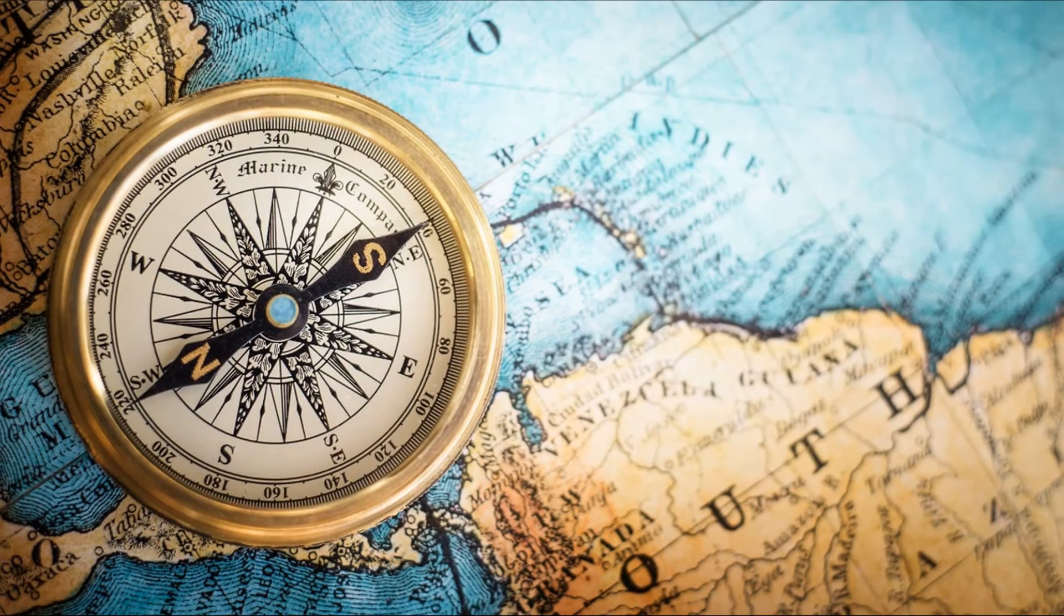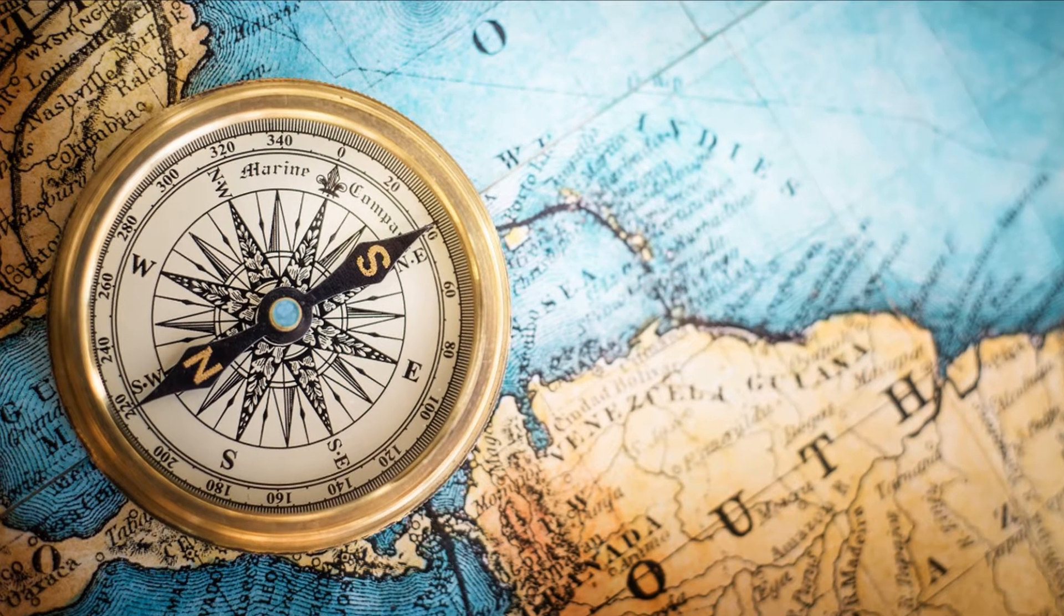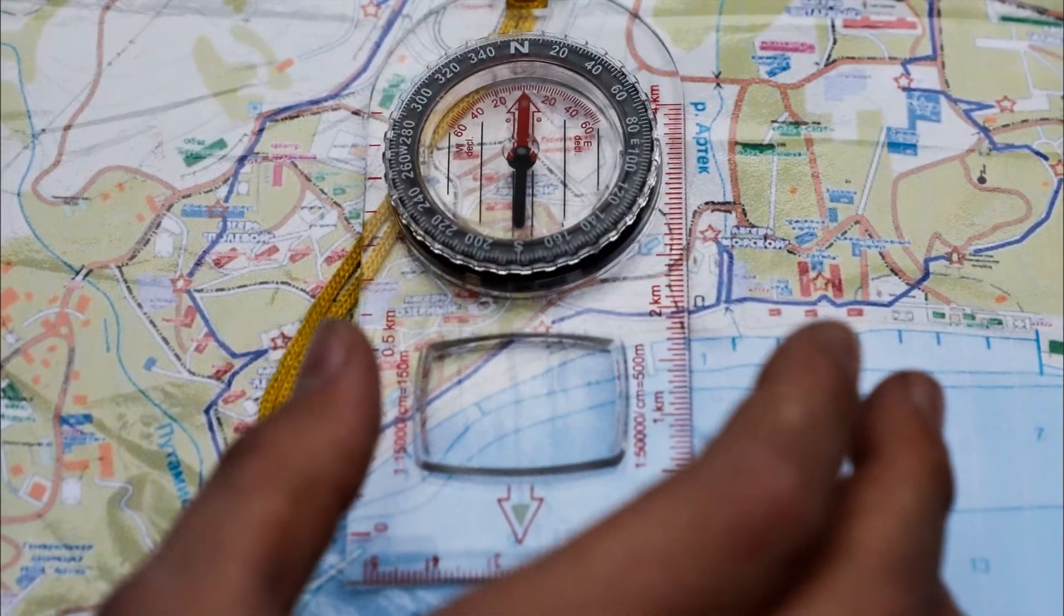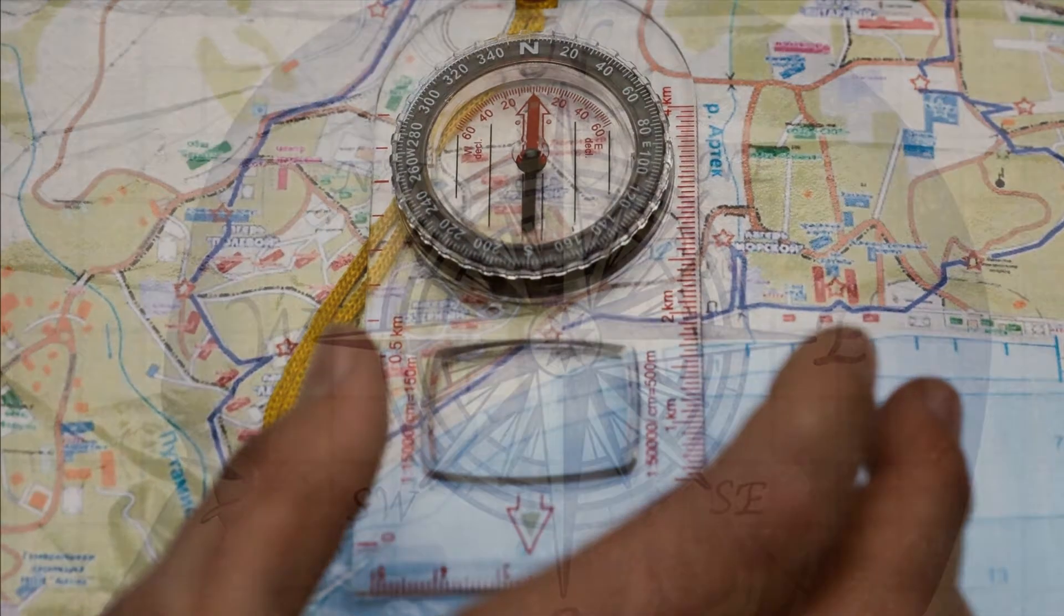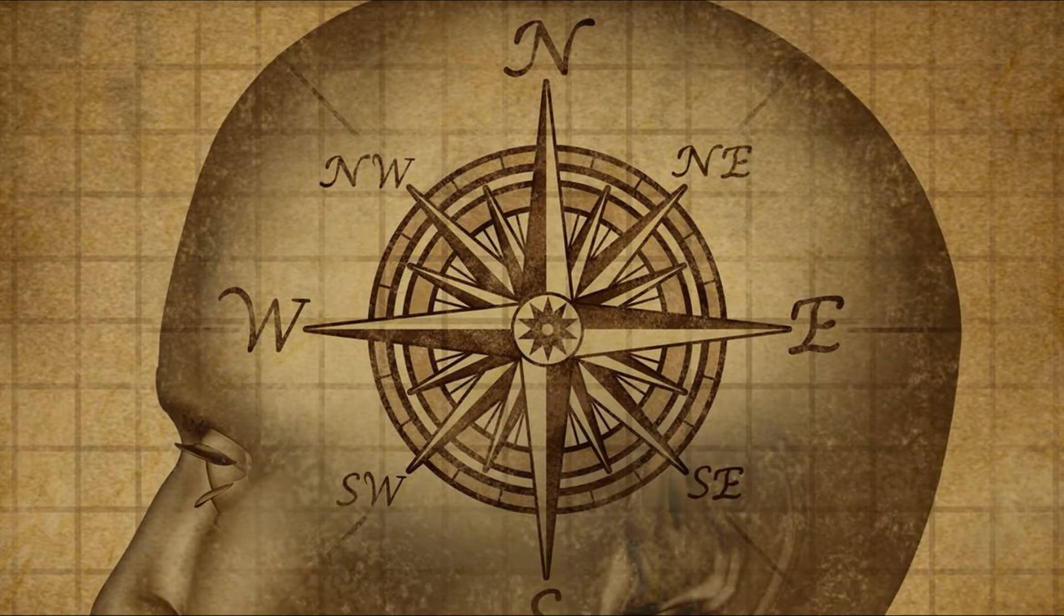The first use of magnetism was in the magnetic compass. It was used by sailors and explorers to find the right direction.